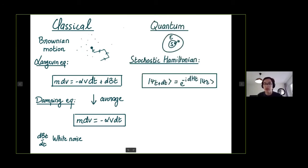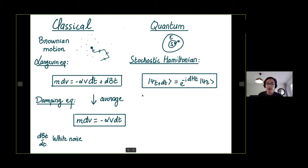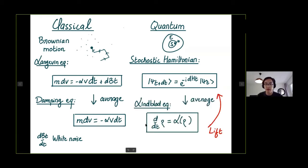Quantum mechanically, we have an analogy where my system is in contact with the environment I described earlier, and the effective description of the system can be made in a stochastic way. The evolution of the wave function is given by a stochastic increment: this is a stochastic unitary and dB_t is also a stochastic Hamiltonian. This is analogous to the Langevin equation at the stochastic level. By performing the average, what you get is a Lindblad equation — the analog of the classical damping equation. The claim of the Stinespring theorem is that you can always go the other way around: for any given Lindblad equation, you can lift it to a stochastic Hamiltonian description.